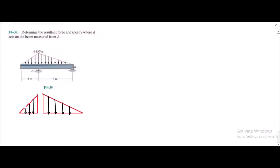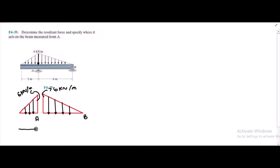Now, 6 kN/m is the maximum loading which acts at this point, and it is common for both of the triangles. So this end is 6 kN per meter, and this end is also 6 kN per meter. This is point B and this is point A. This length is 3 meters — the base of the smaller triangle — and the base of the larger triangle is 6 meters.